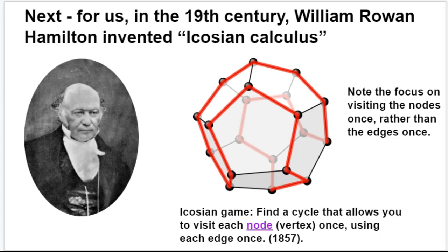The purpose of this game — and this was theoretical math that Hamilton invented — was his interest in shapes called dodecahedrons, one of which is shown here. The challenge of the Eicosian Game was to find a cycle that allowed you to visit each node, which could also be called a vertex, only once, using each edge once.